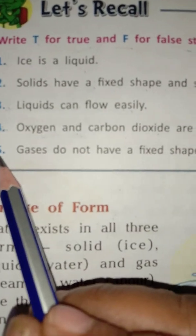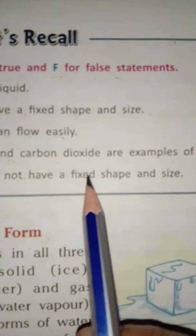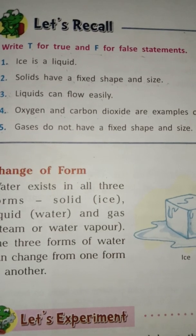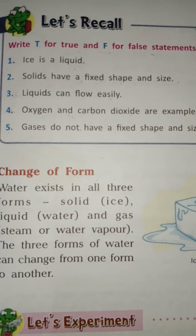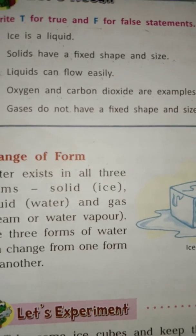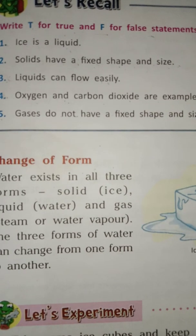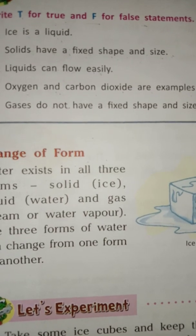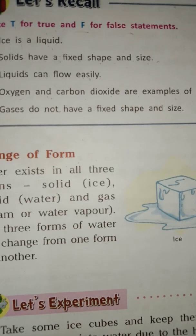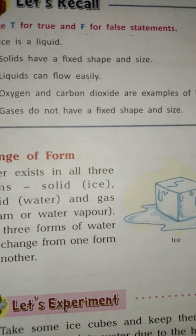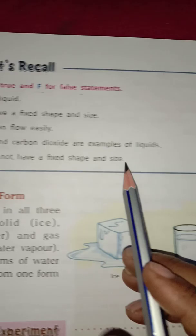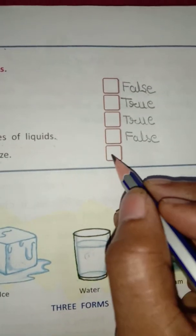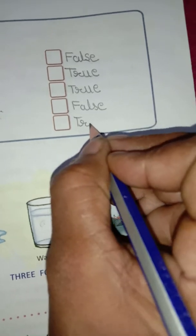The fifth statement is: gases do not have a fixed shape and size. What are gases? Things which do not have a fixed shape and size are called gases. Examples of gases are hydrogen, helium, steam, oxygen, carbon dioxide, nitrogen, etc. So gases do not have a fixed shape and size. Statement 5 is true.